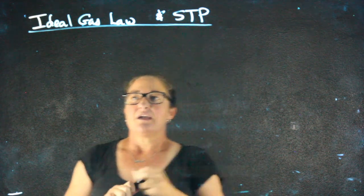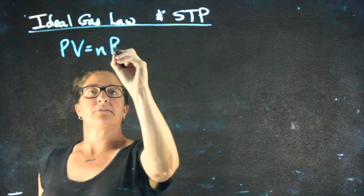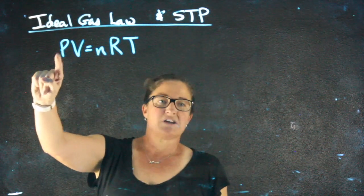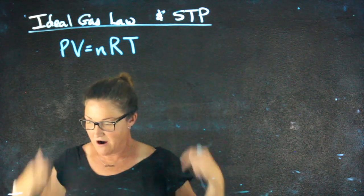The ideal gas law is one of those formulas of chemistry that everybody remembers learning. PV equals nRT. P's pressure, V's volume, T's temperature. N and R are new, and we need to talk about what they are.